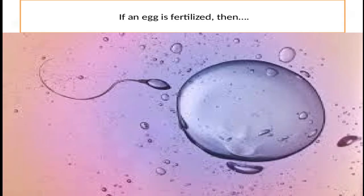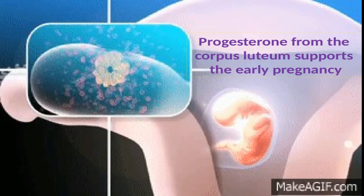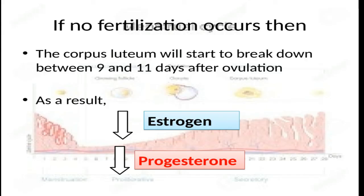If an egg is fertilized, progesterone from the corpus luteum supports the early pregnancy. If fertilization and implantation are not successful, the corpus luteum begins to degenerate within 10 days of being formed. As a result of this degeneration, levels of progesterone and estrogen also decrease, which leads to the degeneration and shedding of the endometrium, and the next menstrual flow begins.